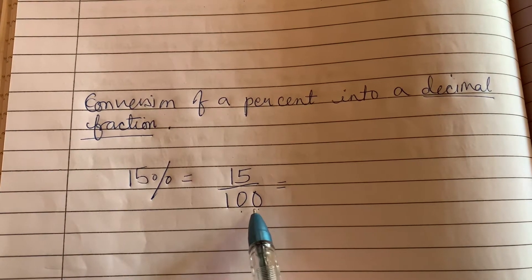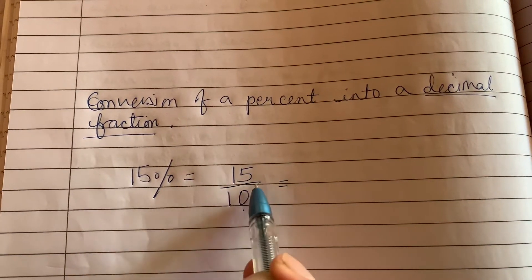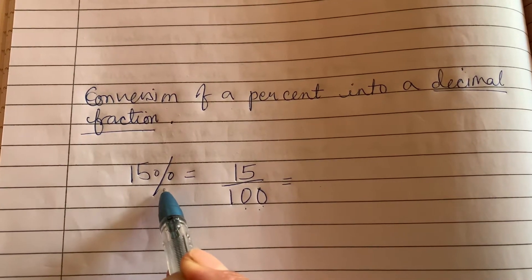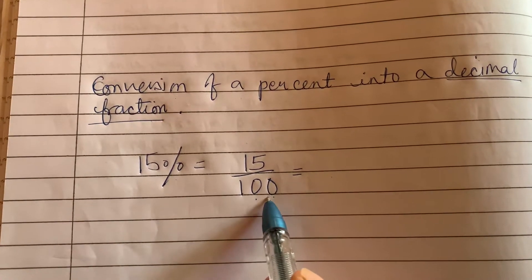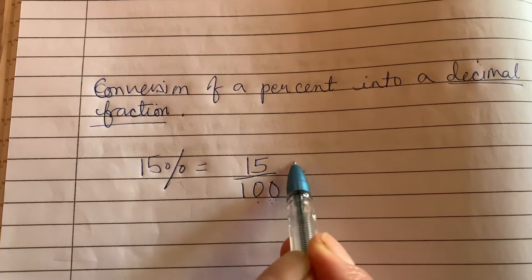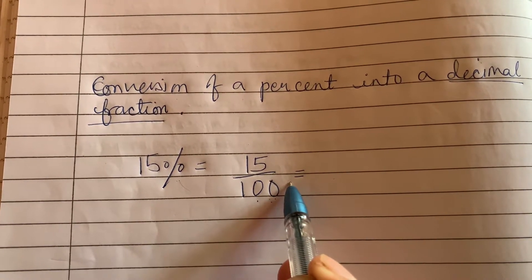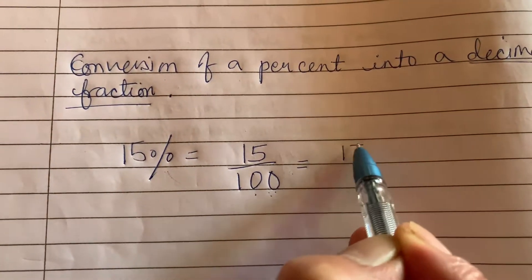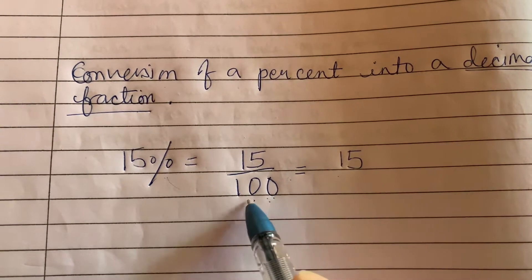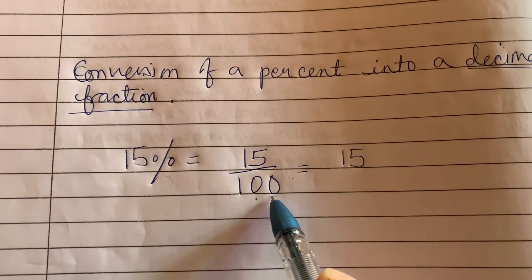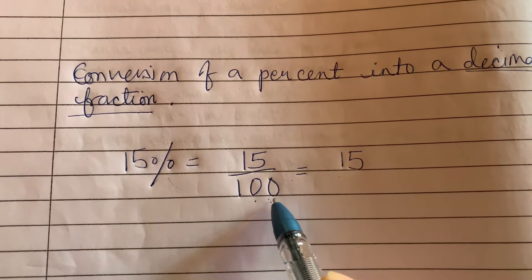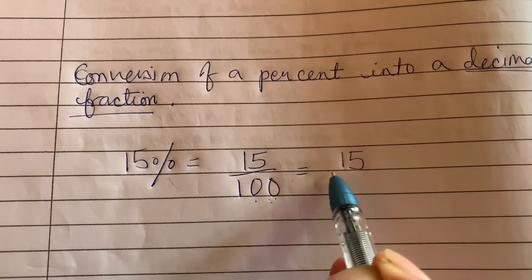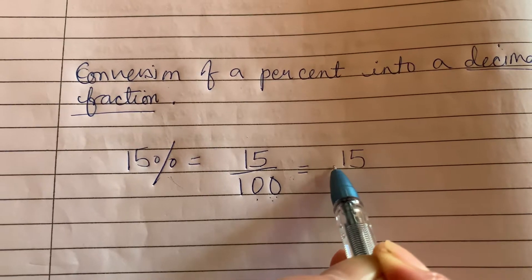You have to express this fraction into decimal form. Remember, when you change percent into a fraction, there is no need to put the percent symbol again — it is now a fraction. So write 15, remove the 100. Since 100 means hundredths, that means two decimal places. You have to move the decimal point two places to the left.